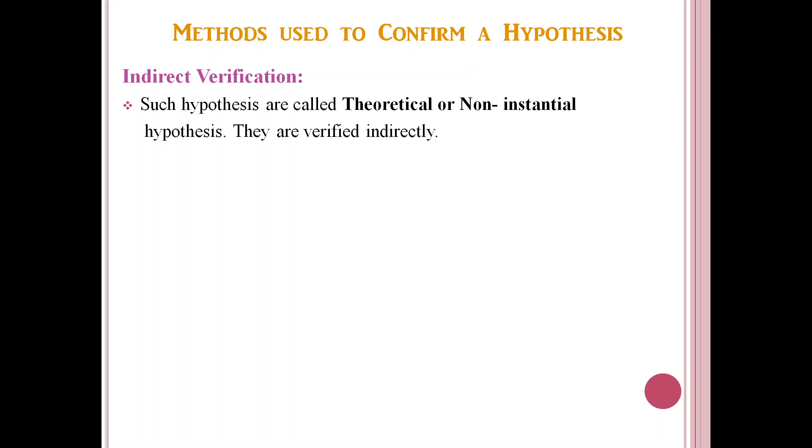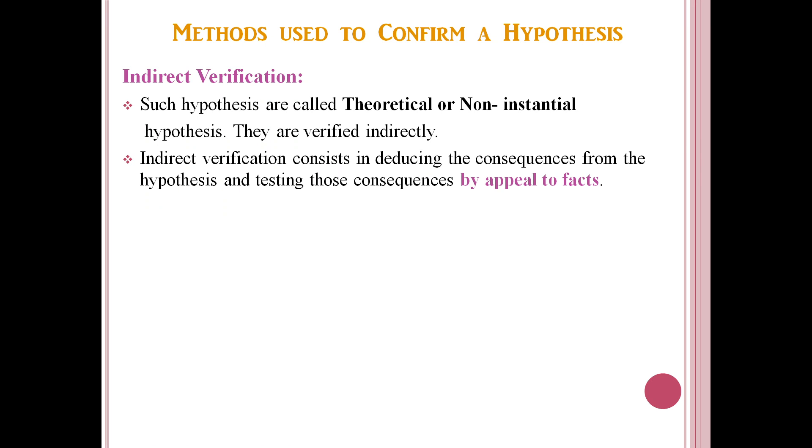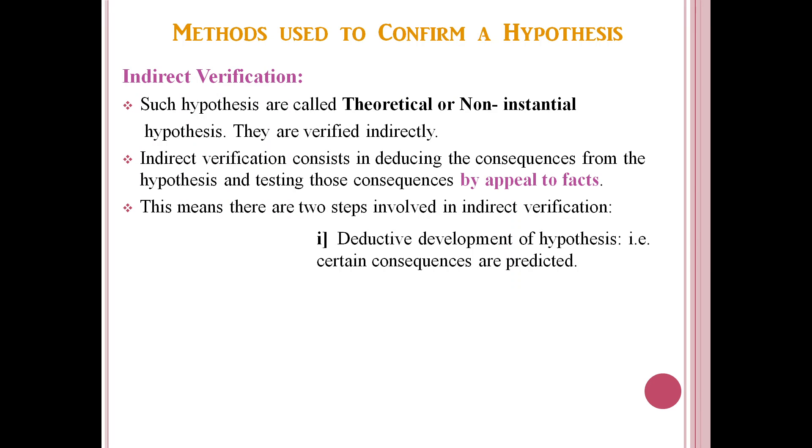Indirect verification consists in deducing the consequences from the hypothesis and testing those consequences by appeal to facts. This means there are two steps involved in indirect verification. The first is deductive development of hypothesis, that is certain consequences are predicted.